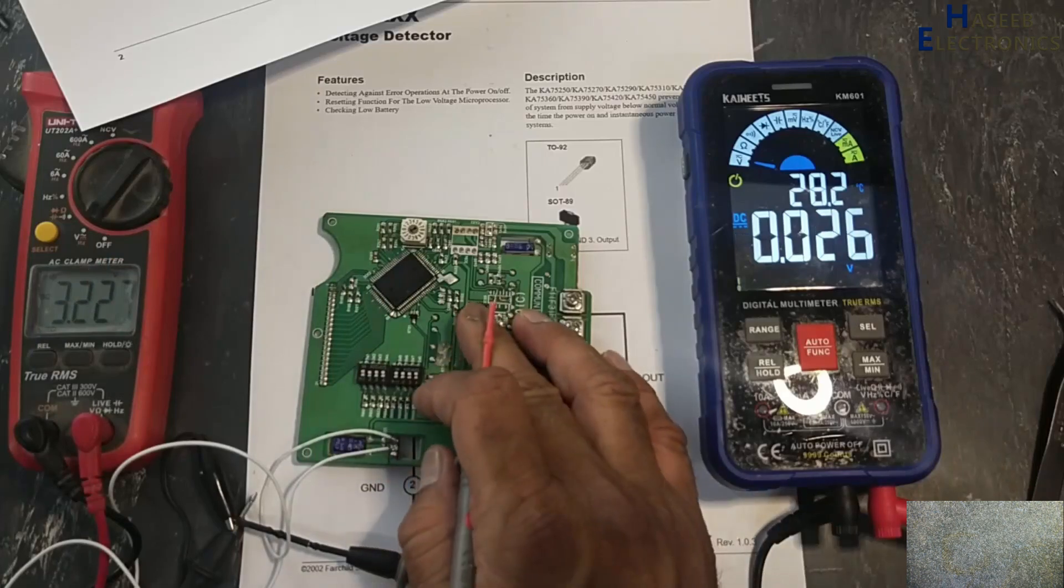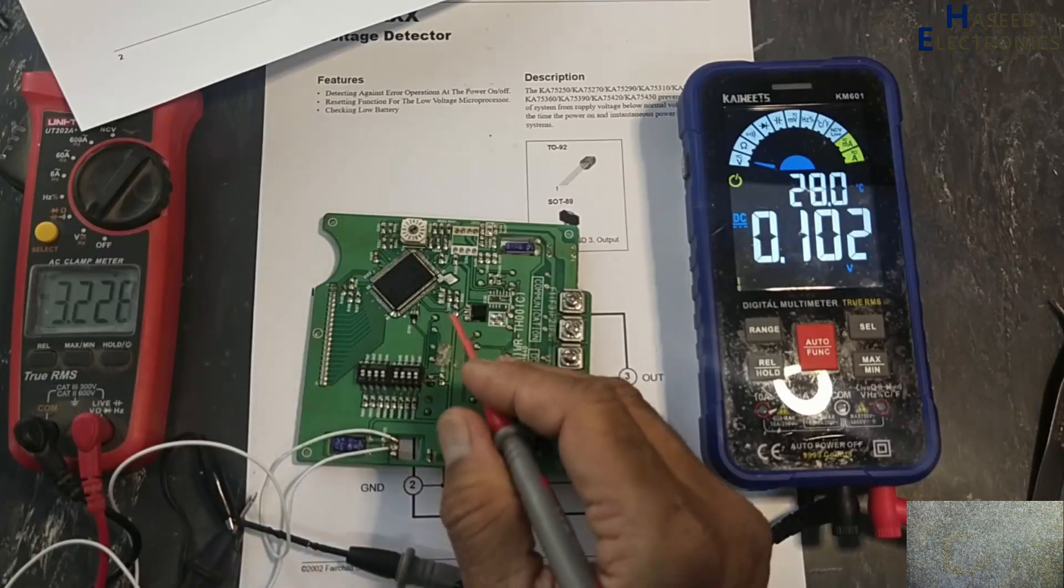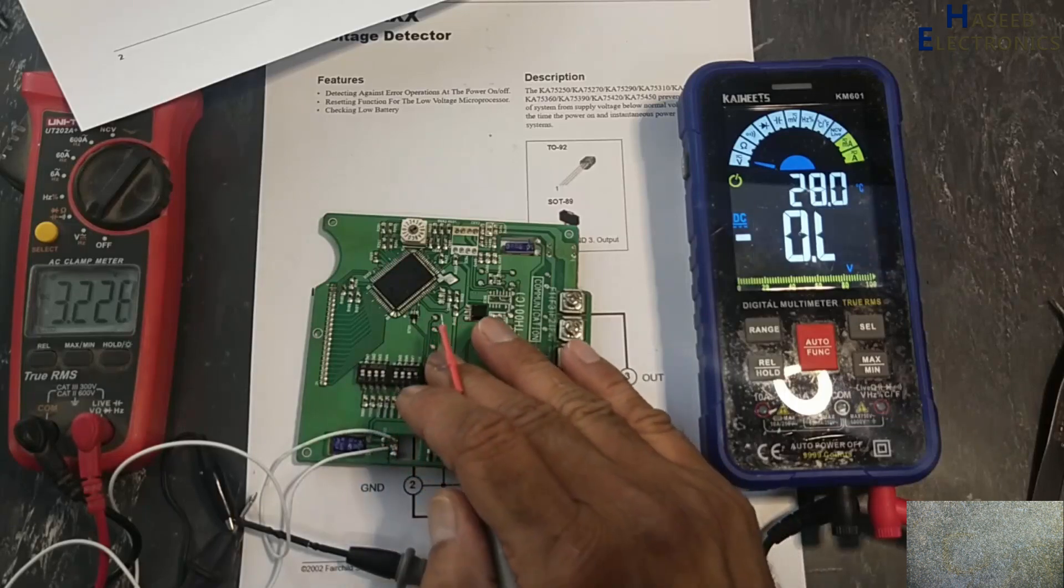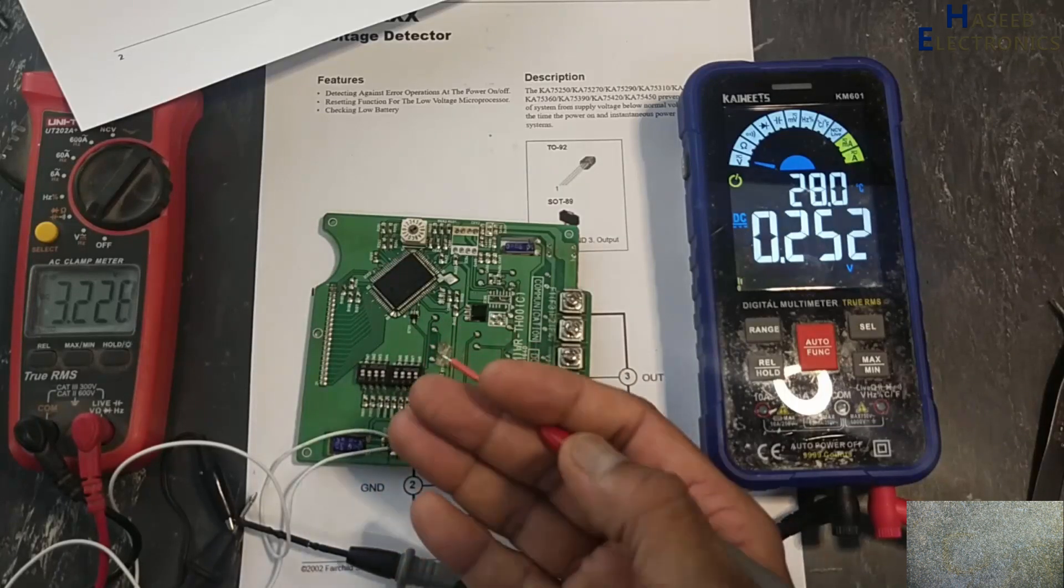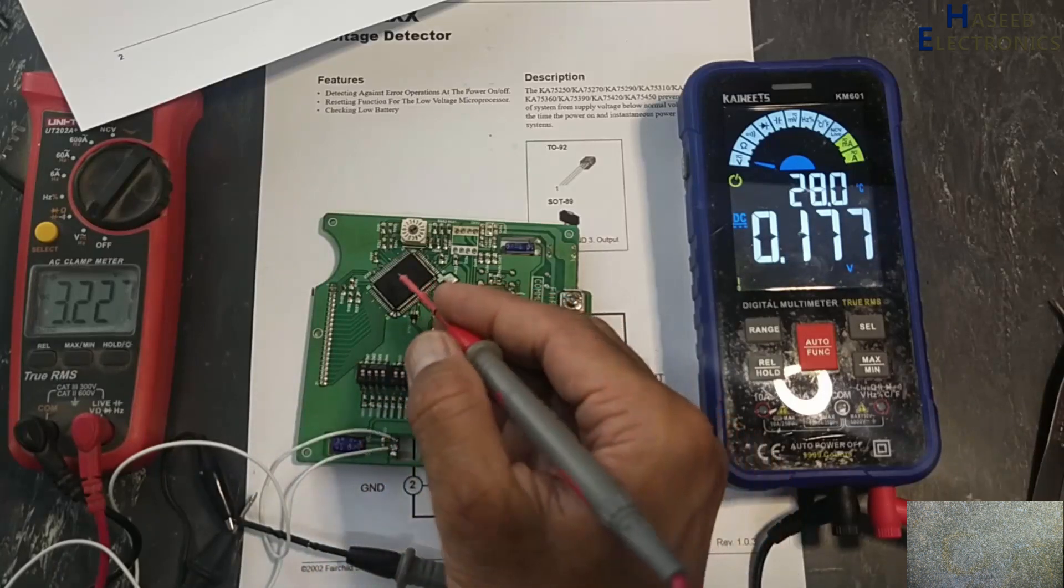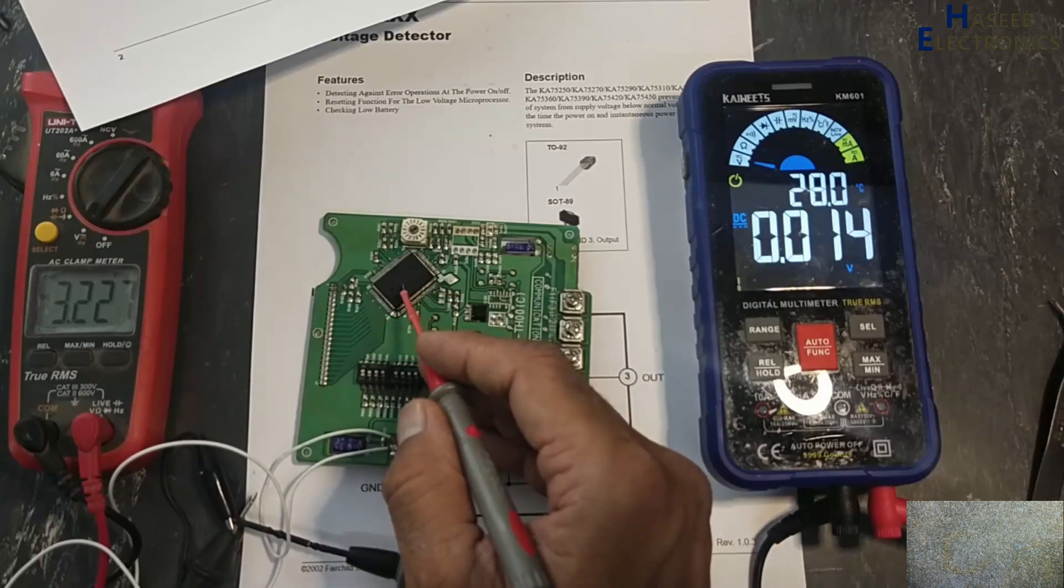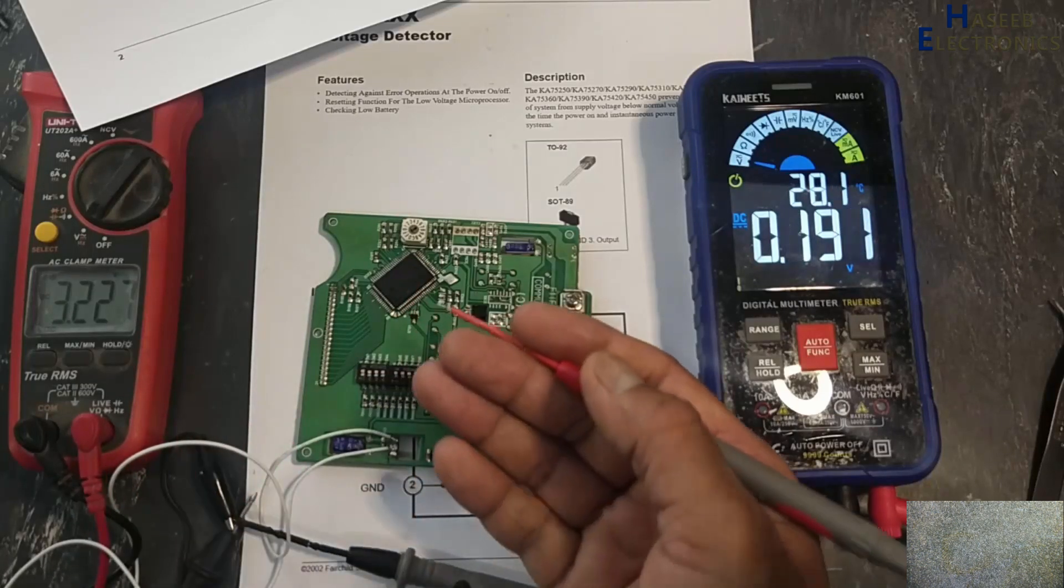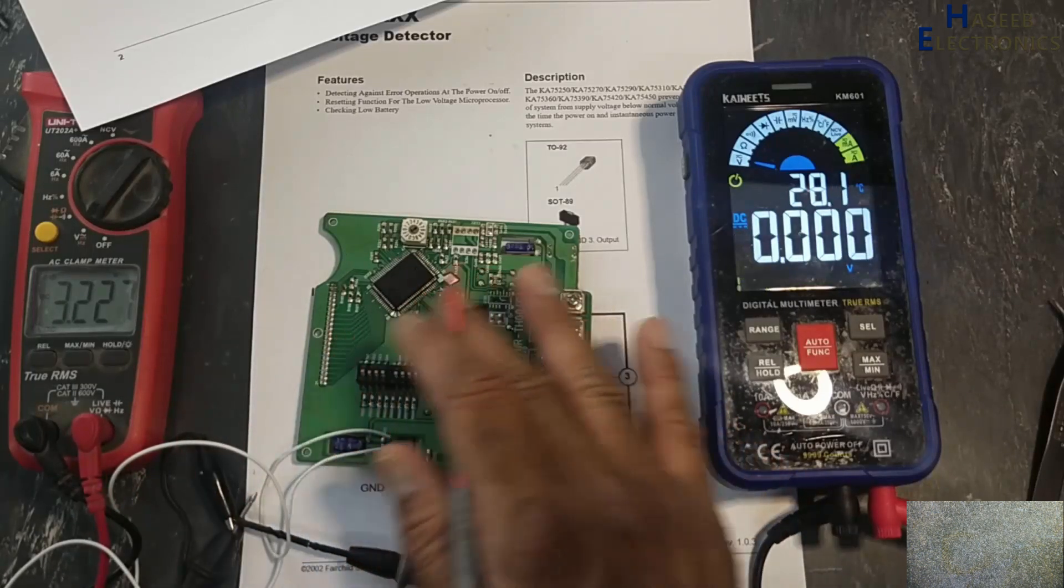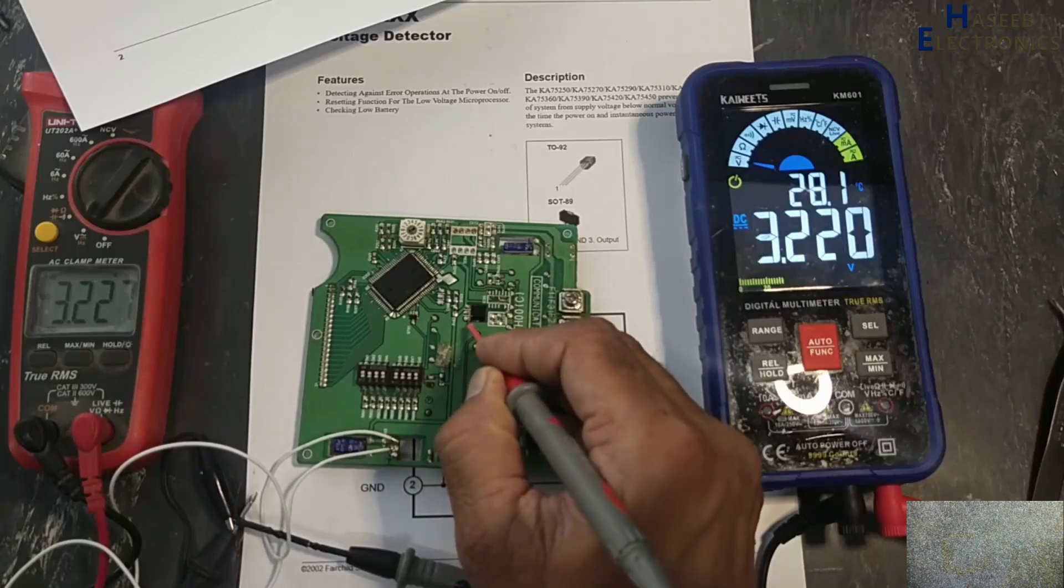So this IC protects the function of this microcontroller. It will ensure that the VCC line is above than the threshold, above than the required voltage of this microcontroller. It's normal working voltage of 5 volt, but less than 3.3 volt it will stop functioning. So it is controlling the reset pin.